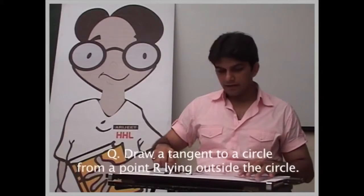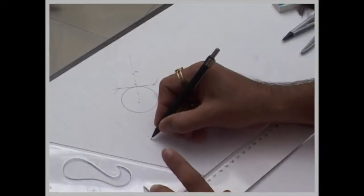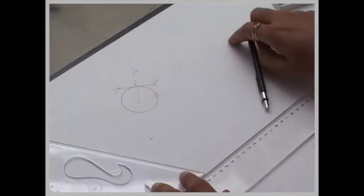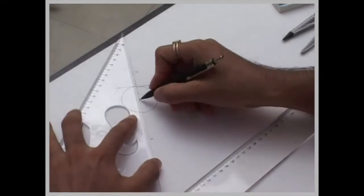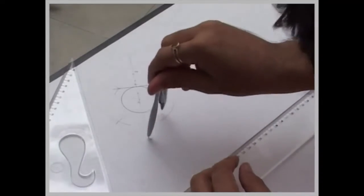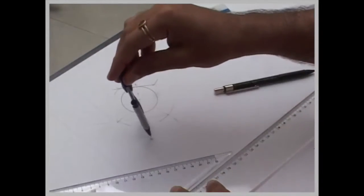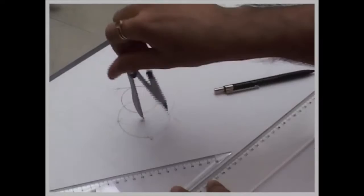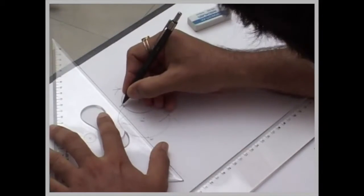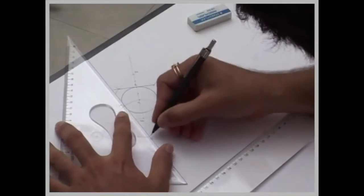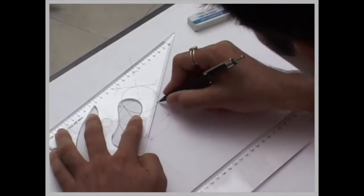Now if we actually draw a tangent from a point which is outside the circle, let's say this is point R and we are going to draw a tangent to this circle. So what we will do? First we will join O to R, bisect O to R, mark that point as S, we will take S to O and draw R. Wherever it is touching that is point T1 and T2. So R to T1 and R to T2.